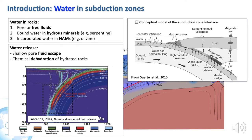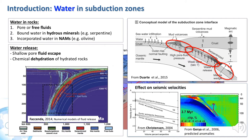Most of the free fluids escape through the accretionary prism at a shallow level. Then, at intermediate levels, it is chemical dehydration that dominates. Beneath the arc, fluids released from the slab are responsible for lowering the melting point of the mantle wedge, and giving rise to arc magmatism. Since water, both in the form of pore fluid and as bound water in the structure of minerals, affects the seismic properties of rocks, we can use seismic techniques to track water fluxes in the subsurface, and particularly in subducting slabs.